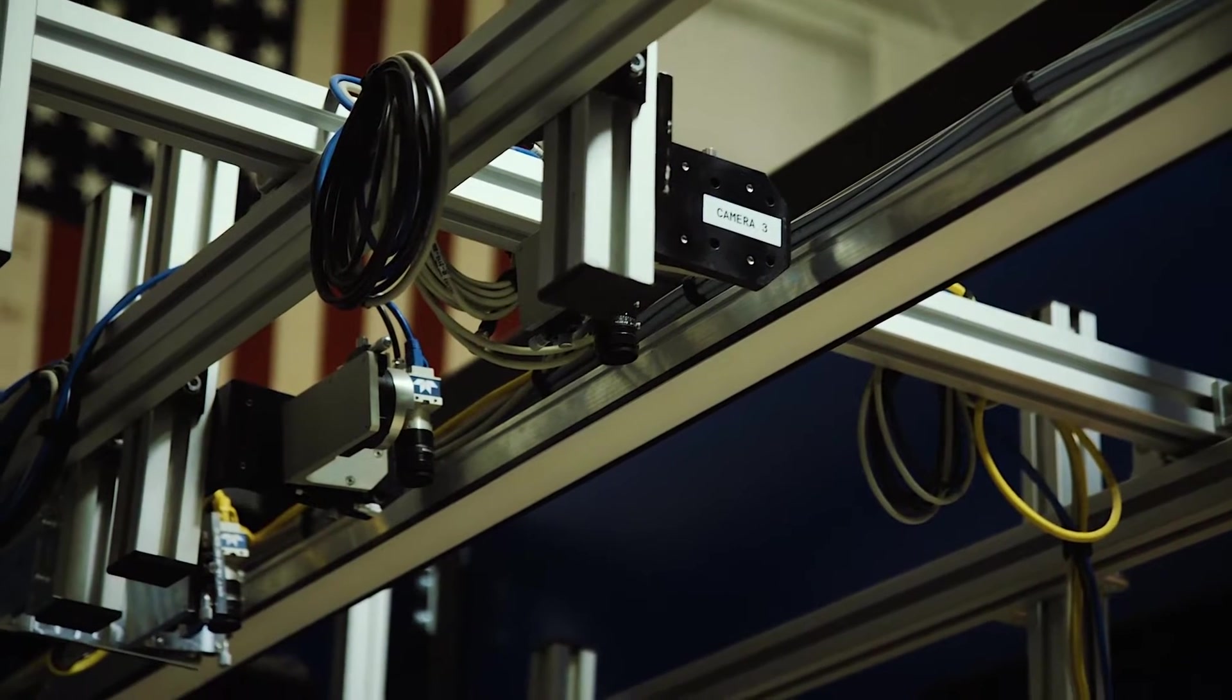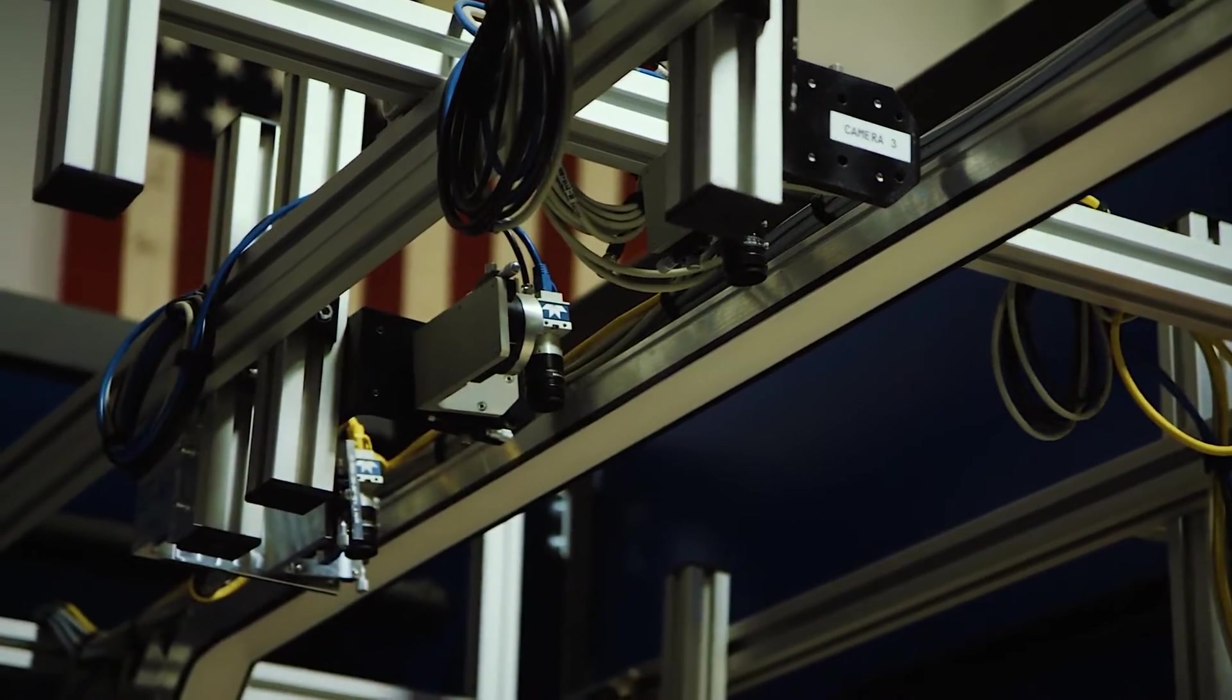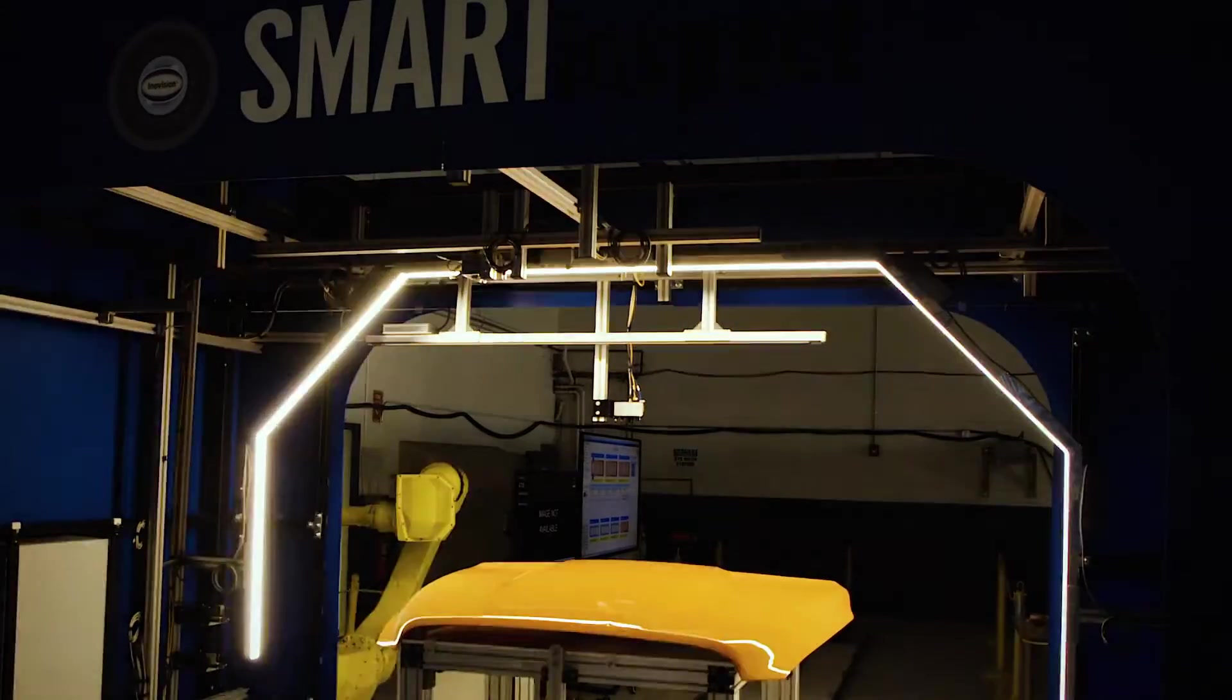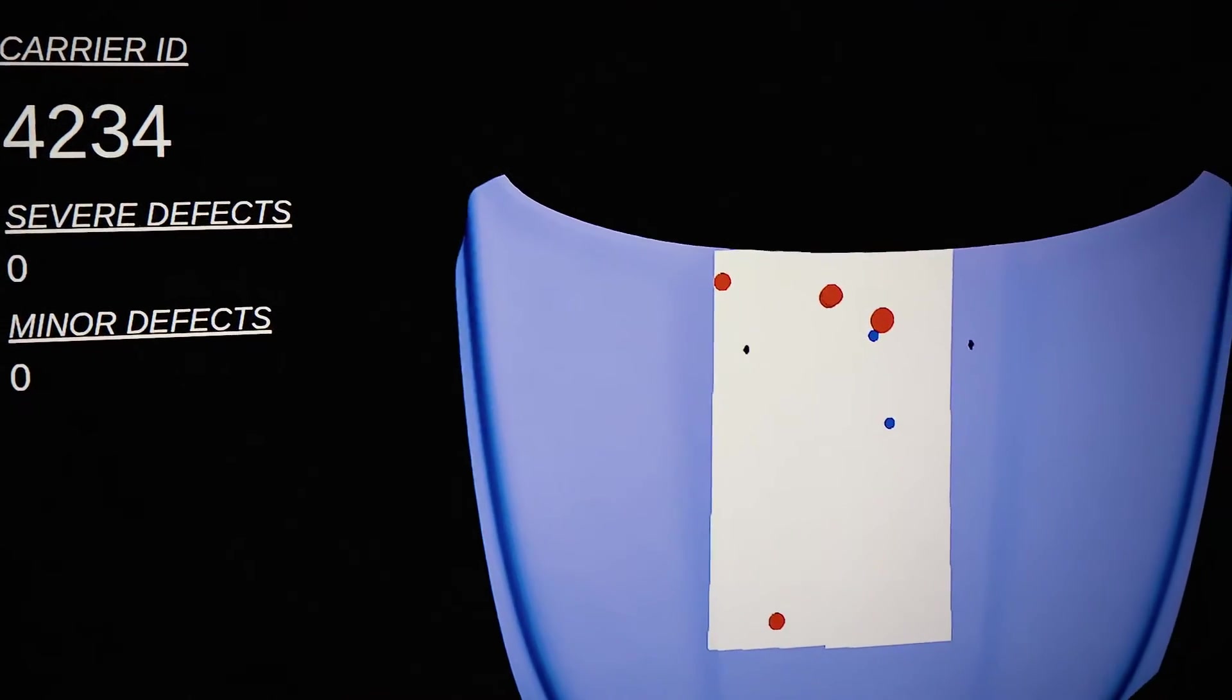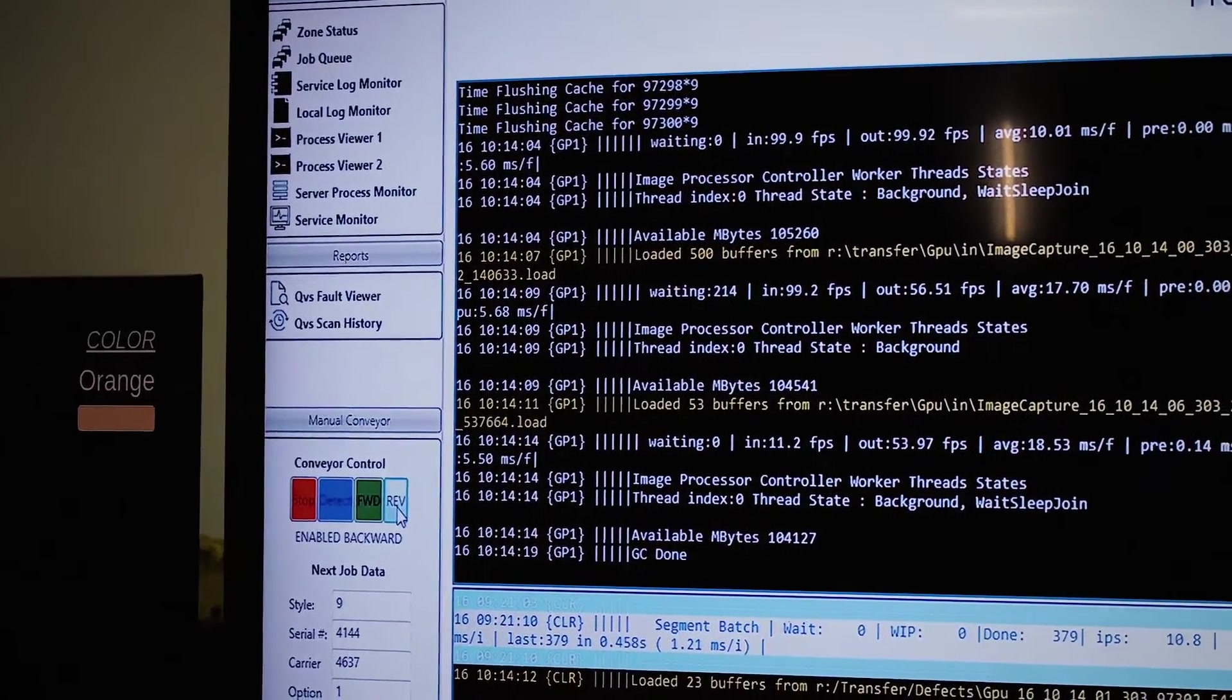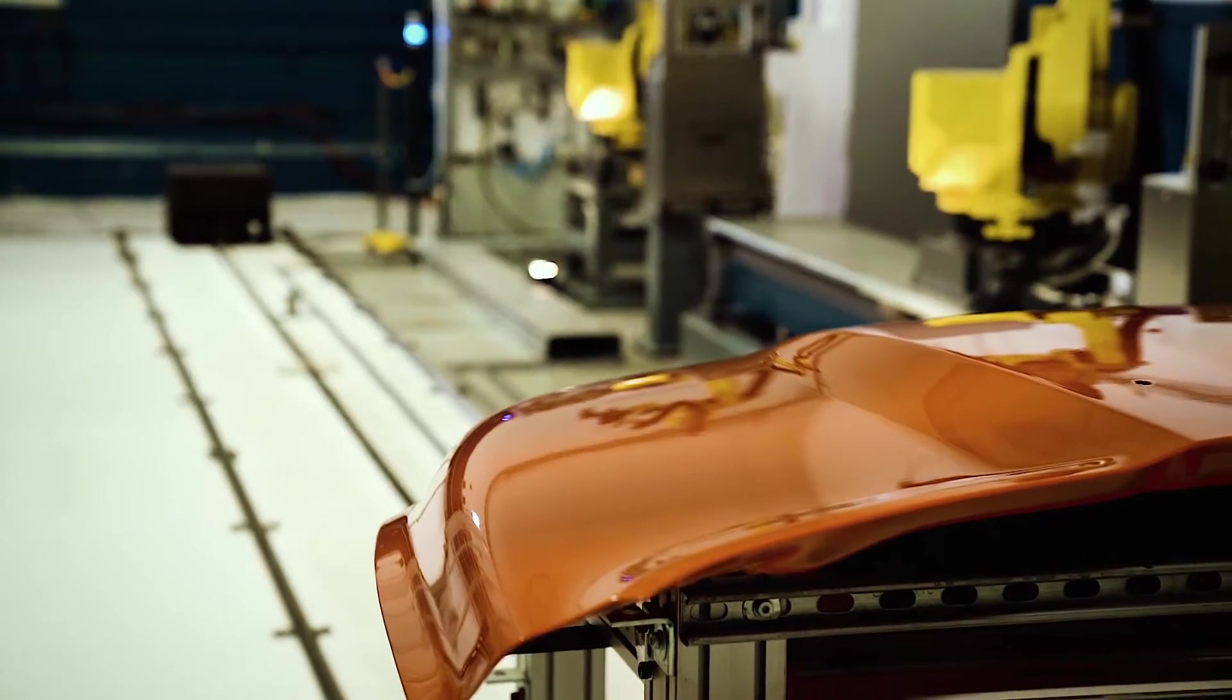3M's preferred integration partner network has vision systems capable of completing this inspection either at a stop station or on a moving assembly line. That's right, the line does not necessarily have to stop for this step in the process. And the vision system collects data that can be analyzed for actionable insights, so you can optimize your processes.